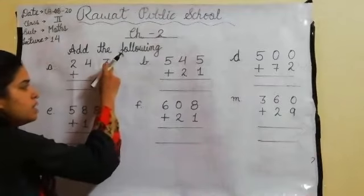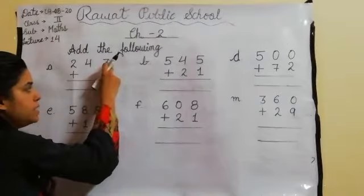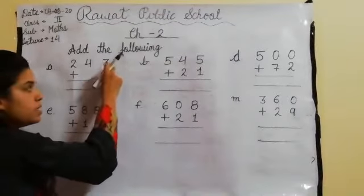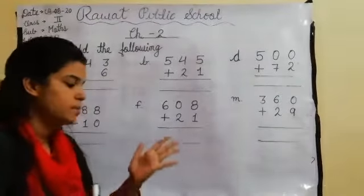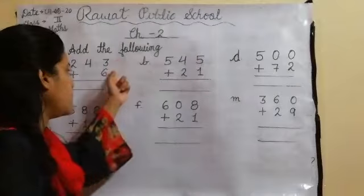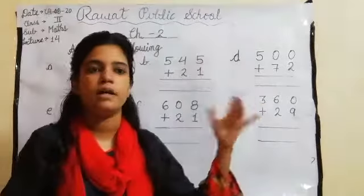So firstly we will add the number 3 and 6. We have to add the number 3 and 6. So according to number 3, which number is big in your mind?